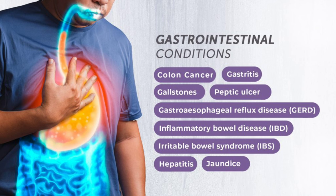Another triad: hepatomegaly + diabetes + bronze/brown shiny skin → hemochromatosis. Hemochromatosis is accumulation and deposition of iron in different organs: liver (hepatomegaly, hepatoma), pancreas (diabetes mellitus), skin (bronze skin), joints (arthropathy), heart (arrhythmia, cardiomyopathy). The most likely cancer in hemochromatosis due to iron deposition is liver cancer (hepatoma).